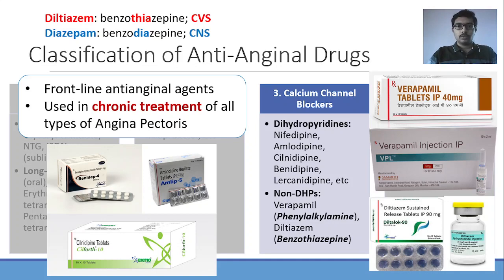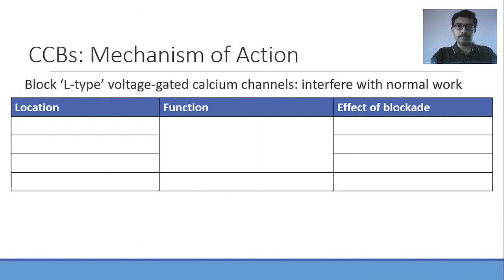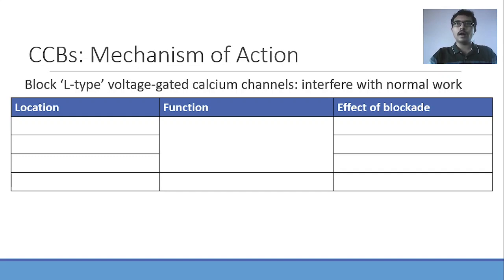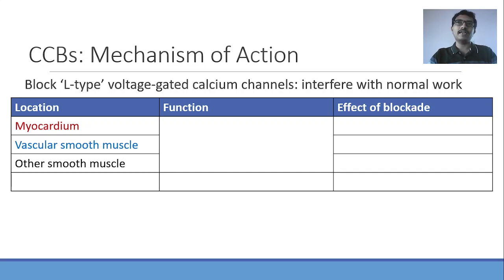Moving on — the mechanism of action. As the name suggests, calcium channel blockers block calcium channels. Specifically, they block L-type voltage-gated calcium channels. There are different types — L-type, N-type, and others — but calcium channel blockers selectively block the L-type. When blocked, calcium cannot enter the cell. The most important locations for L-type calcium channels are three types of muscle: myocardial muscle, vascular smooth muscle, and other smooth muscles. They are present in skeletal muscle too, but calcium channel blockers do not significantly affect those.